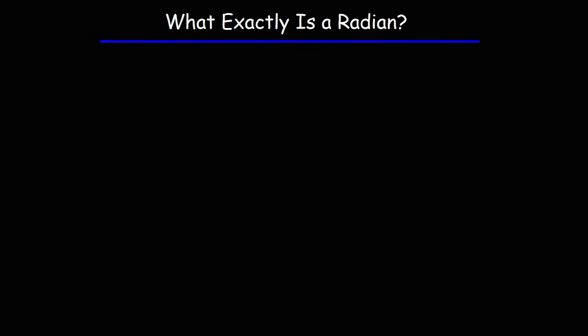What exactly is a radian? Well, in this video, we're going to talk about that. A radian is a unit of angle measure. A radian is equal to an angle measure of approximately 57.3 degrees.